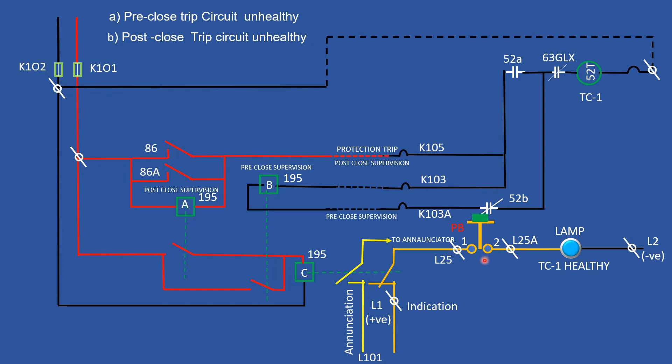Before closing a circuit breaker, L1 is connected to the circuit as positive, and L2 as negative. After pressing push button before closing the circuit breaker, the supervision relay is not energizing, which means pre-close trip circuit is unhealthy.